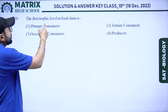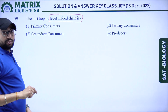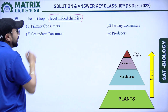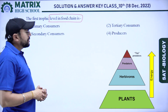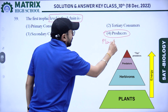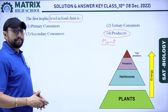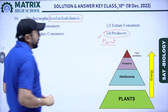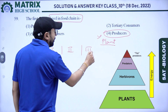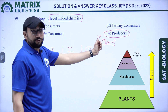Next question: the first trophic level in a food chain. The food chain involves producers and consumers. Options: primary consumer, tertiary, secondary, and producer. Producer is the first step because plants are present at the first trophic level and all other consumers depend on plants. So our right answer is producer — first trophic level, then second, then third.